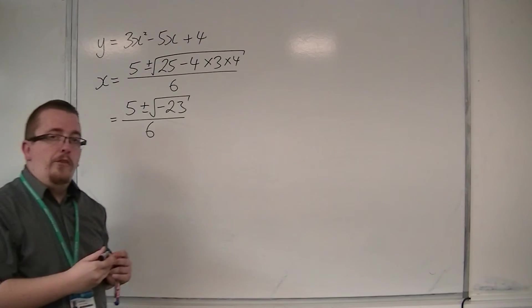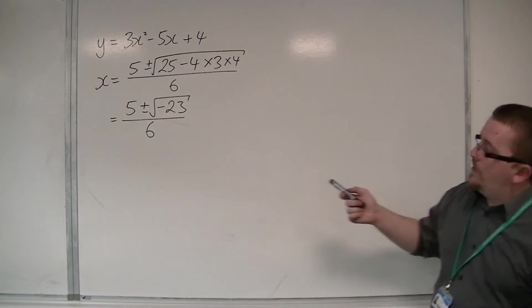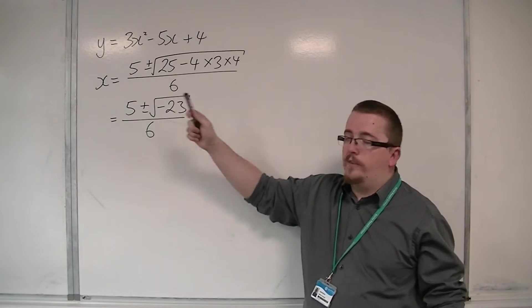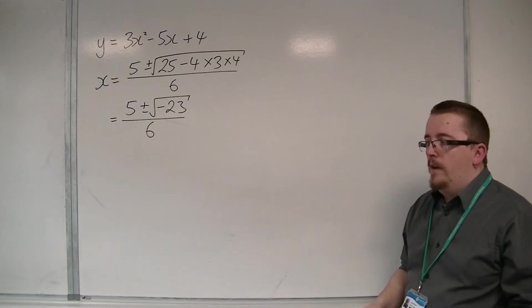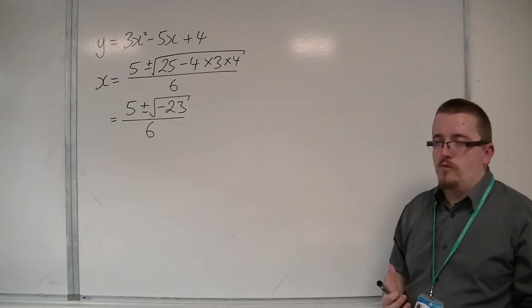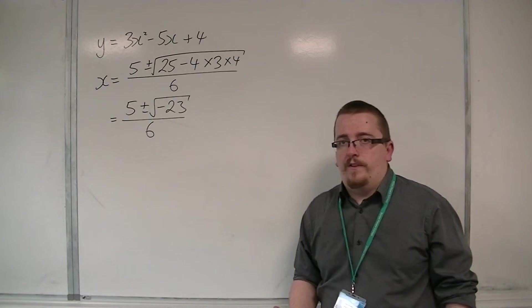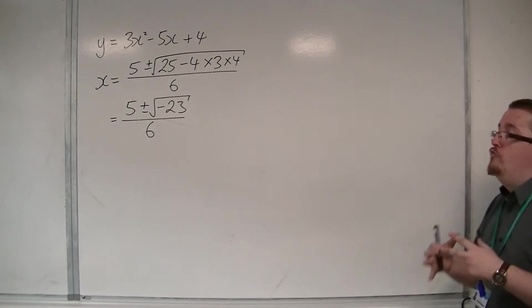And this is where the problem comes in. The problem has come in with this, because we can't square root a negative number without bringing in complex numbers and imaginary roots, which we don't do at this stage, because we can't square root a negative number and get a real answer.